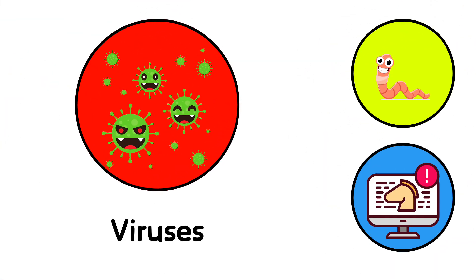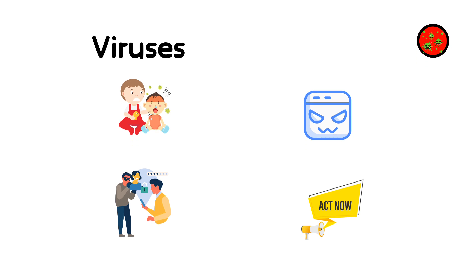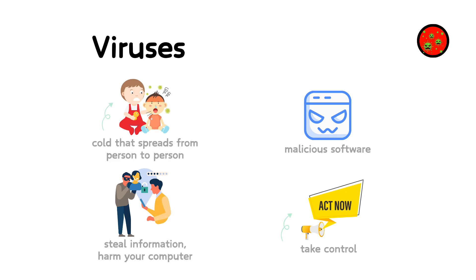21. Viruses. A virus is like a cold that spreads from person to person. In the digital world, a virus is a type of malicious software that, once executed, replicates itself by modifying other computer programs and inserting its own code. When this replication succeeds, the affected areas are said to be infected. Viruses can steal information, harm your computer, or even take control of it.